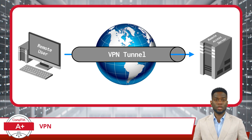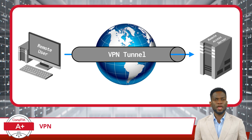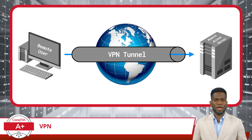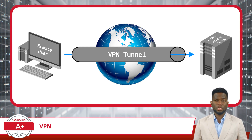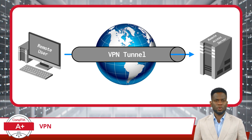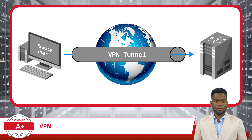When you connect to a VPN, your data is encrypted before it leaves your device, making it unreadable to anyone who might intercept it. This means that even if you're using a public Wi-Fi network, your data remains secure and private.